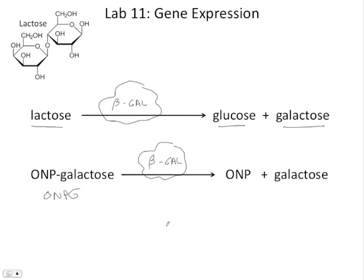The reason why this reaction is useful for us in lab is that the ONPG molecule is clear, whereas the ONP molecule by itself is yellow. So we'll be able to watch for this color change, and we'll also be able to detect this yellow product using the spectrophotometer.